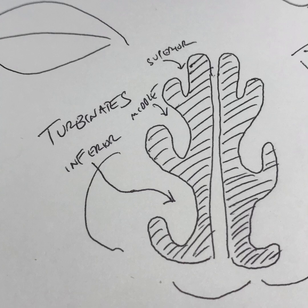I also have delineated the turbinates, which are structures that droop into the nasal airway space like branches from a tree. There's a lower set that we call inferior, there's a middle set we call middle, and those are the two most important on each side. There's also a superior turbinate, which is not as clinically important.